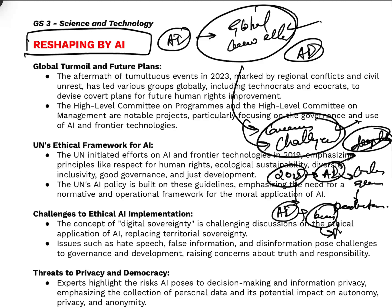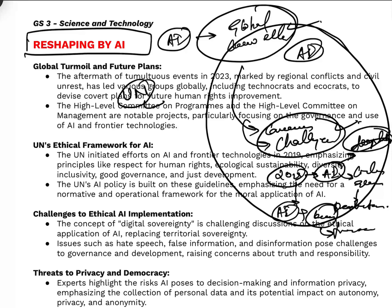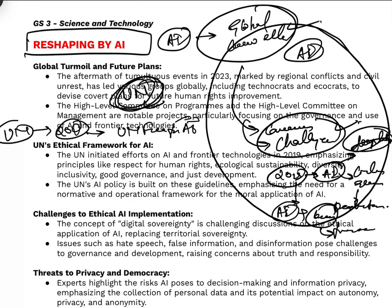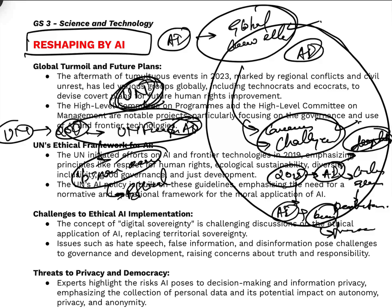The focus is on how to tackle AI concerns using frontier technology. The article highlights the efforts of the United Nations in tackling AI. The UN in 2019 brought a framework for AI, aiming to build a normative and operational framework and also to form an ethical framework — emphasizing that ethics needs to play a dominant role in regulating AI.